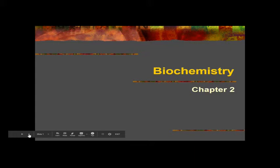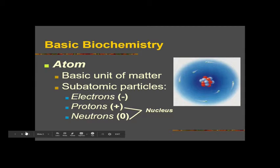We're going to be covering some basic biochemistry terminology. A lot of this might feel familiar from middle school. You've probably talked about some of this terminology before, especially like atom. An atom is a basic unit of matter, and that just means that everything is composed of atoms — whether it's a living organism or something non-living, atoms are what basically builds everything.